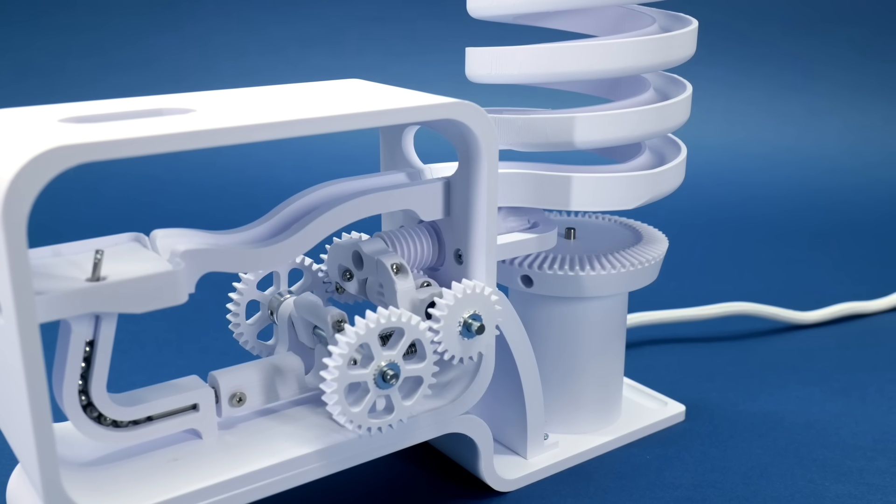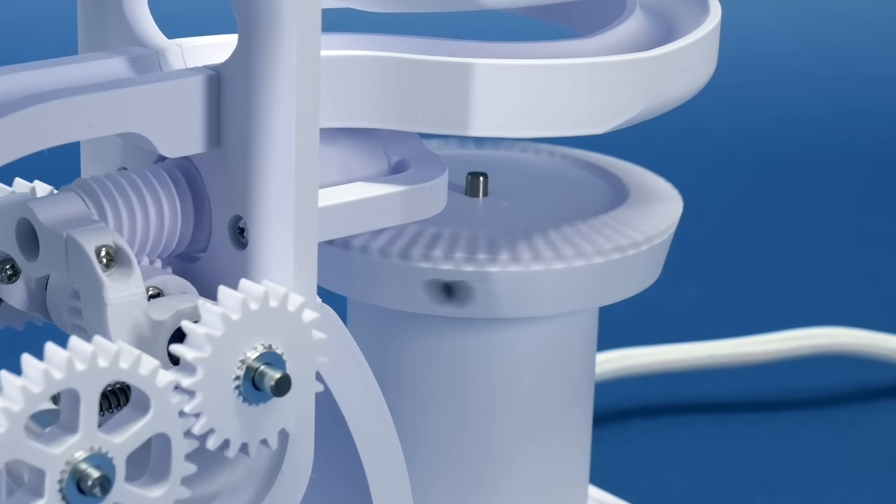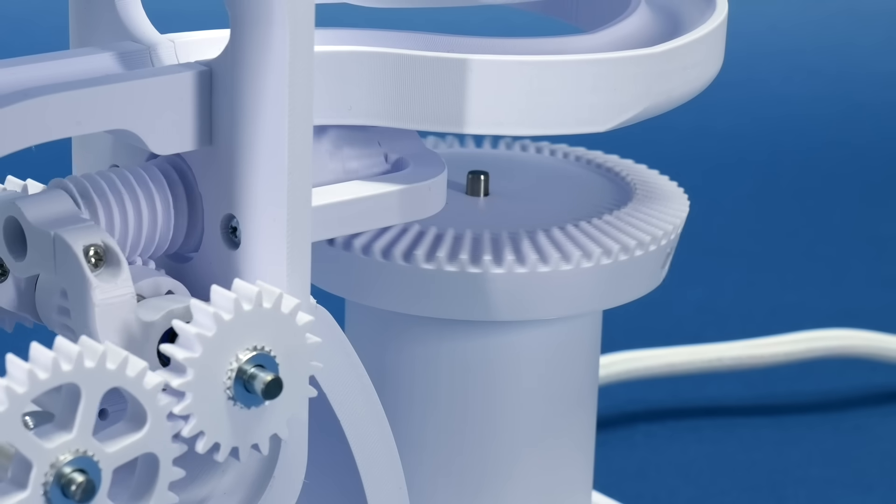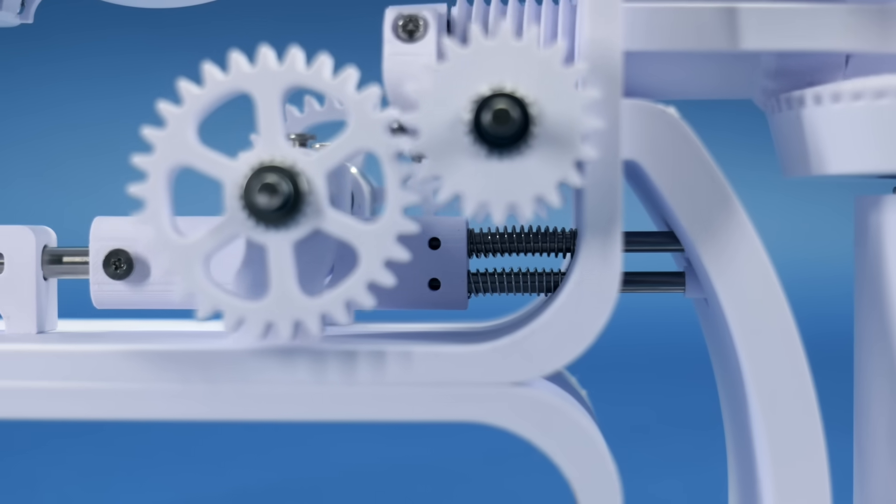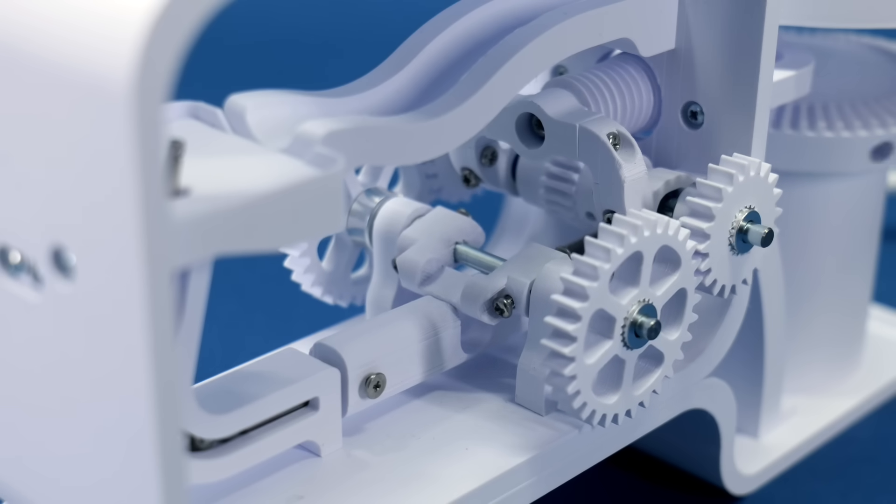Fortunately, in this configuration, the motor can spin much faster than we need, so the trade-offs don't affect this design. The high torque output from the worm gear is important because we're going to need a lot of torque to compress the springs. That's where this mechanism comes in.